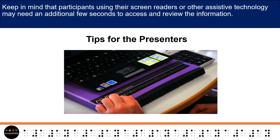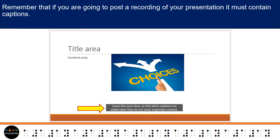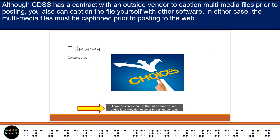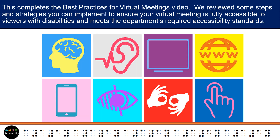Keep in mind that participants using screen readers or other assistive technology may need an additional few seconds to access and review the information. Remember that if you are going to post a recording of your presentation, it must contain captions. When creating your presentation, be sure to leave room near the bottom for captions. You do not want to cover any important information when the captions are added. Although CDSS has a contract with an outside vendor to caption multimedia files prior to posting, you can also caption the file yourself with other software. In either case, the multimedia files must be captioned prior to posting to the web. This completes the Best Practices for Virtual Meetings video.